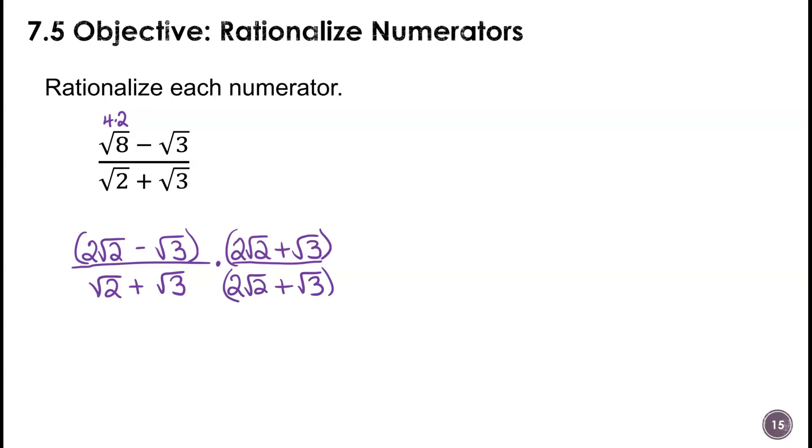All right, and I have to multiply my denominator by the same thing. Okay, so we take 2 times 2, which is 4, and the square root of 2 times the square root of 2 is 2. So 4 times 2 is 8.